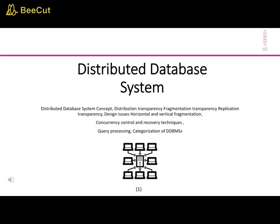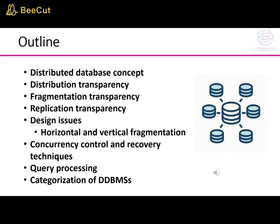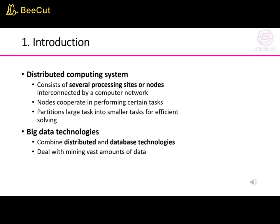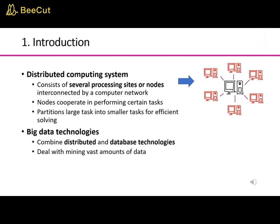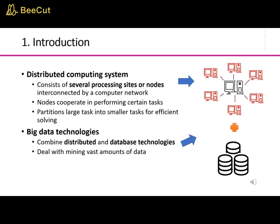This is the Distributed Database System Concept Lesson. A distributed computing system consists of several processing sites or nodes interconnected by a computer network. Nodes cooperate in performing certain tasks and partition large tasks into smaller tasks for efficient solving. Big data technologies combine distributed and database technologies to deal with mining vast amounts of data.